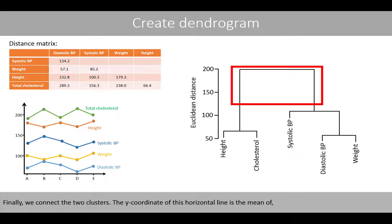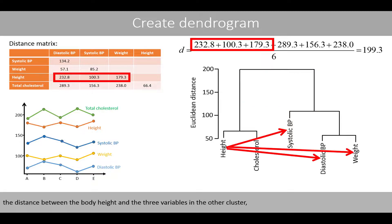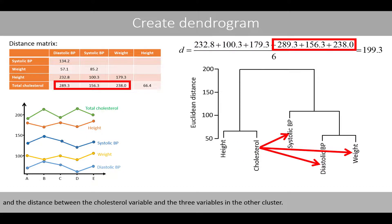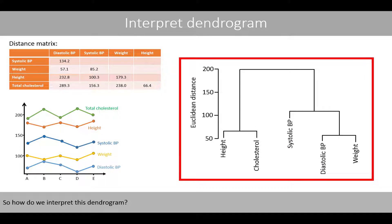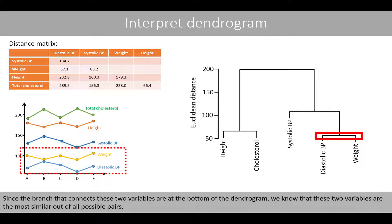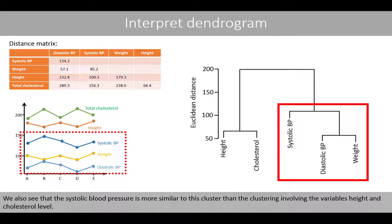Finally, we connect the two clusters. The y-coordinate of this horizontal line is the mean of the distance between the body height and the three variables in the other cluster, and the distance between the cholesterol variable and the three variables in the other cluster. Since the branch that connects these two variables is at the bottom of the dendrogram, we know that these two variables are the most similar out of all possible pairs. We also see that the systolic blood pressure is more similar to this cluster than the cluster involving the variables height and cholesterol level.